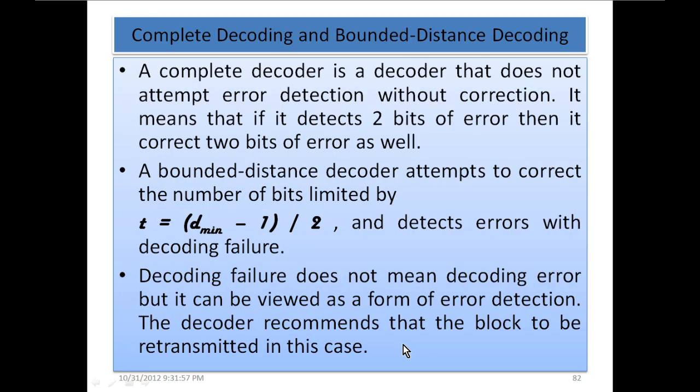A complete decoder does not attempt error detection without correction — as many bits as it detects in error, it also corrects. A bounded distance decoder attempts to correct only up to T = (d_minimum − 1) / 2 bits, and detects errors beyond that with a decoding failure. For example, a code with 2-bit detection capability and 1-bit correction capability will produce a decoding failure for 2-bit errors.